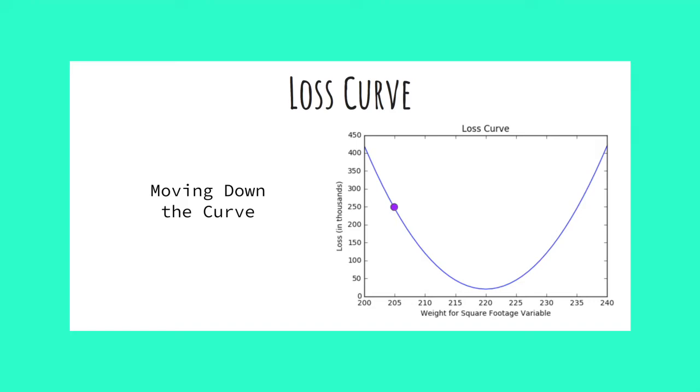Gradient descent is the same. The algorithm can't tell you where the bottom is, but it can tell you which direction is down. So what we do is take many small steps in the downward direction until we reach the bottom of the curve.